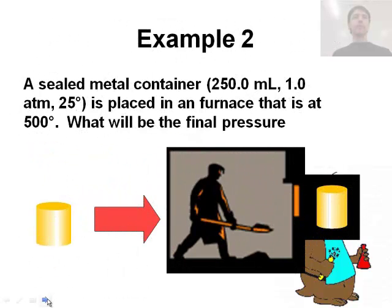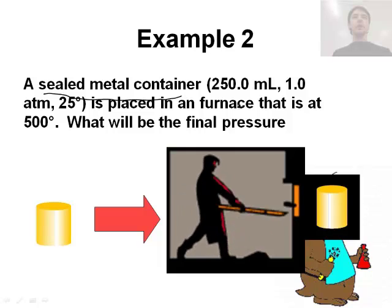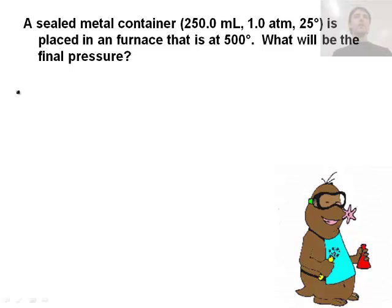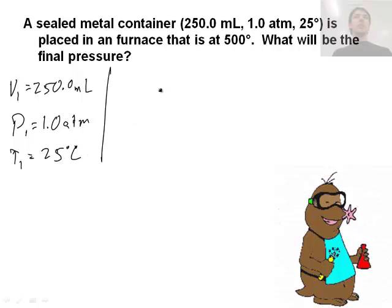Let's do another one: a sealed metal container - that's important - with a volume of 250.0 milliliters, pressure of 1.0 atmosphere, and temperature of 25 degrees Celsius is placed in a furnace that is at 500 degrees Celsius. What will be the final pressure? We're solving for p2. What about my volume? It's a sealed metal container - metal containers don't change volume. The volume is 250 milliliters both times, v1 and v2.